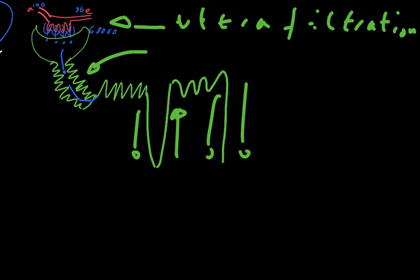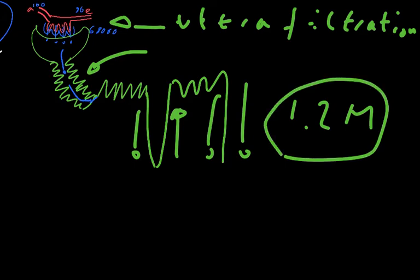Now, the important thing to consider, one of the many important things to consider about the kidney is don't think of the nephrons as acting in isolation. You have 1.2 million nephrons per kidney and they all affect each other.